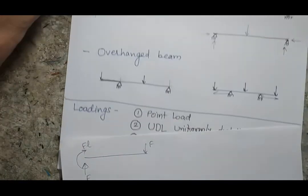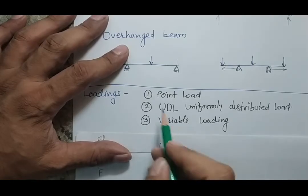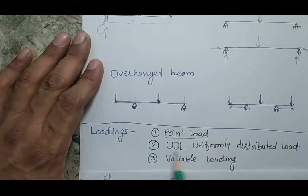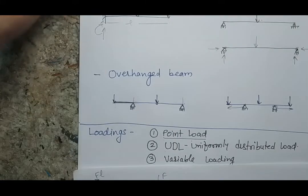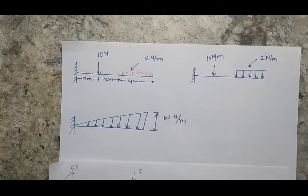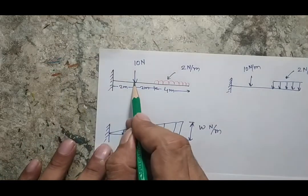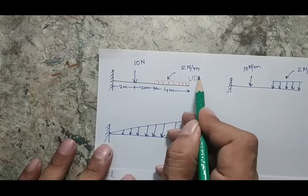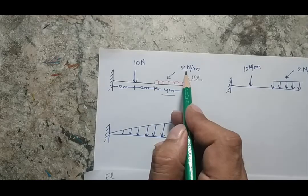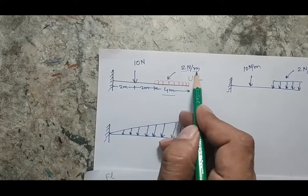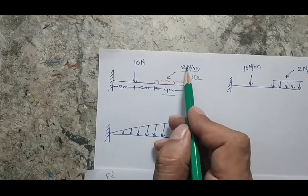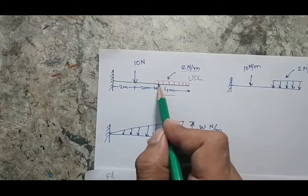Now let's talk about different types of loading. We are going to consider three types mainly. The first is a point load — a load concentrated at a single point. The second is a uniformly distributed load (UDL). I am showing all these loads on a cantilever beam. The representation of a UDL shows that for a certain length the load is uniformly distributed.